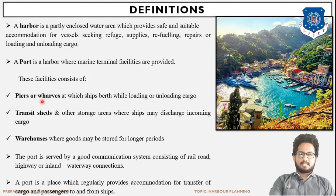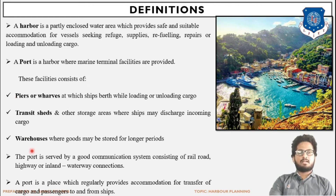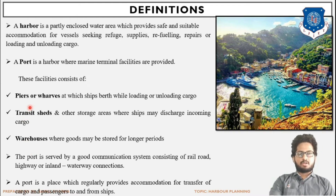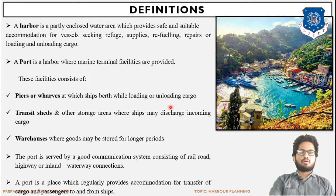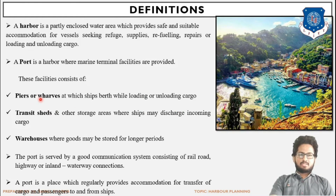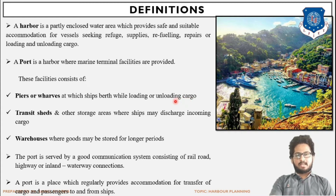Right now we will only be studying the functions of these elements in short; we will learn them in detail in Chapter 4. The marine terminal facilities include firstly piers or wharves, at which ships work while loading or unloading cargo. Piers or wharves are basically those harbor elements — platforms — where the loading or unloading of cargo is being done.